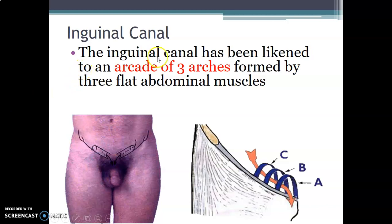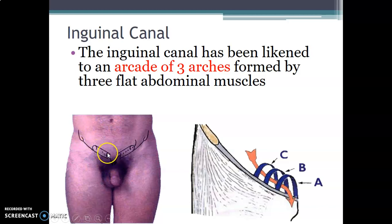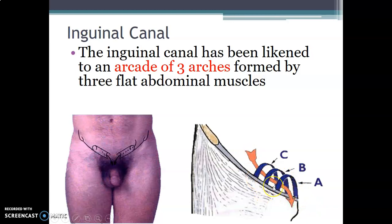The inguinal canal is above and parallel to the inguinal ligament, which runs from the anterior superior iliac spine to the pubic tubercle. It is 3 to 5 centimeters and has been likened to an arcade of three arcs formed by the three flat abdominal muscles: external oblique, internal oblique, and transverse abdominis. These form an arcade over the inguinal ligament.